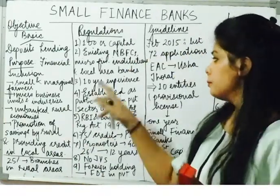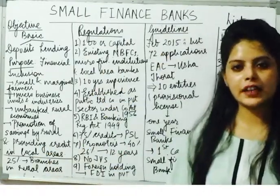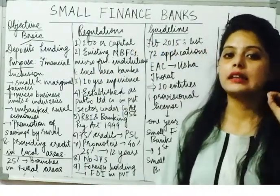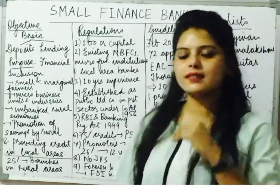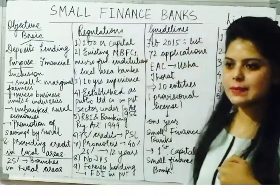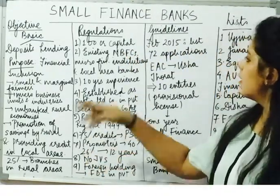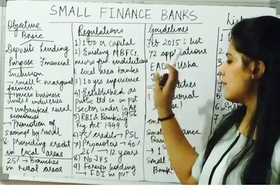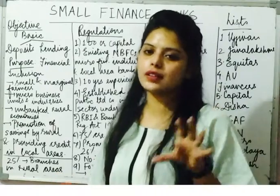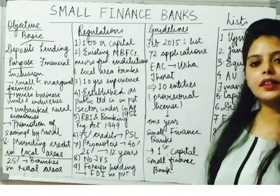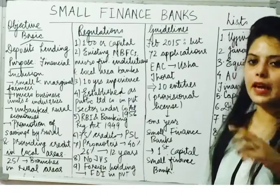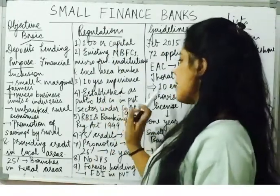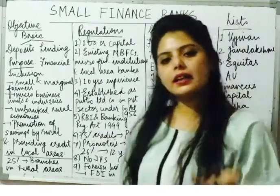The third point is that 10 years of banking experience is required in order to apply for the license of a small finance bank — 10 years of experience in the banking sector, non-banking financial institutions, or micro financial institutions. Most of the small finance banks were first micro finance institutions that got converted into small finance banks. Non-banking financial institutions and local area banks with 10 years of experience and minimum capital of 100 crore can apply.